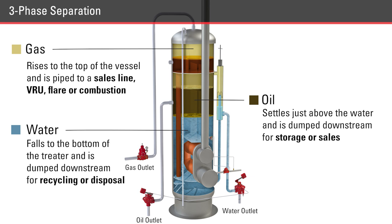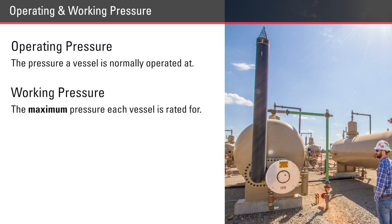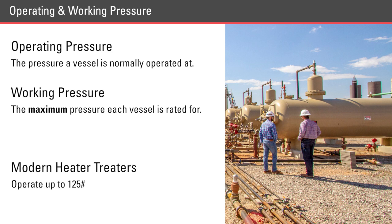Heater treaters are often the last stage of separation before a resource gets stored or sold, so it is important that all three phases get separated. Operating pressure is the pressure a vessel is normally operated at, while working pressure is the maximum pressure each vessel is rated for. Most modern heater treaters operate at a pressure of up to 125 pounds, and Kimray products used on those treaters have an operating pressure of at least 125 psi.